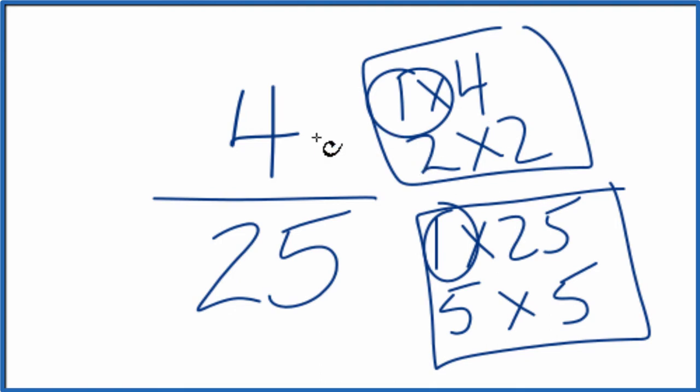What that means is that 4/25, it's already been simplified to its lowest terms. We can't reduce this any further. If we divide 4 by 1 and 25 by 1, we still get 4/25.